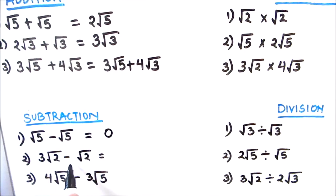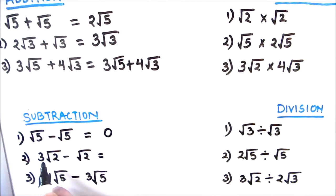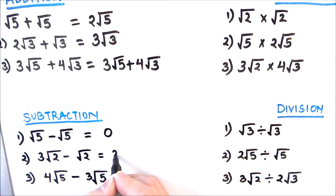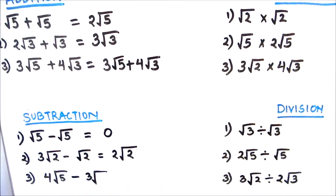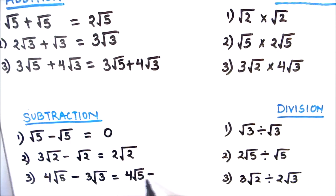The next example is 3 root 2 minus root 2. This is like 3x minus x, or 3 root 2 minus 1 root 2, so 3 minus 1 is 2 and we get 2 root 2. The next example is 4 root 5 minus 3 root 3. Here the numbers under the root sign are different, so we cannot subtract — we write it as is: 4 root 5 minus 3 root 3.